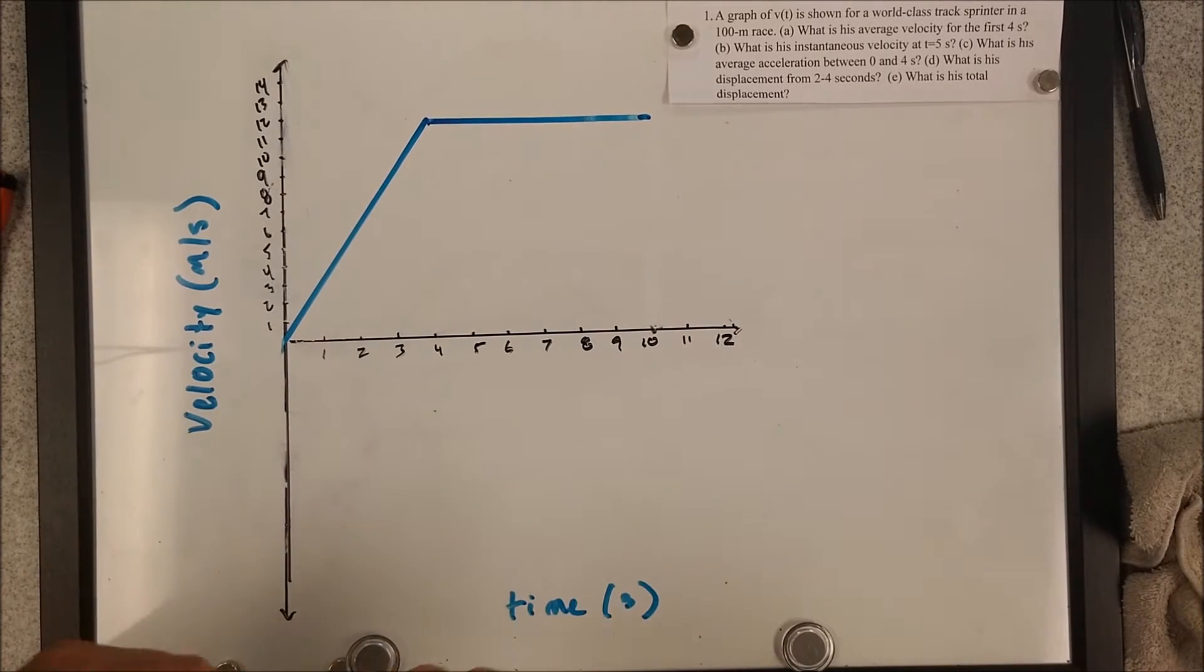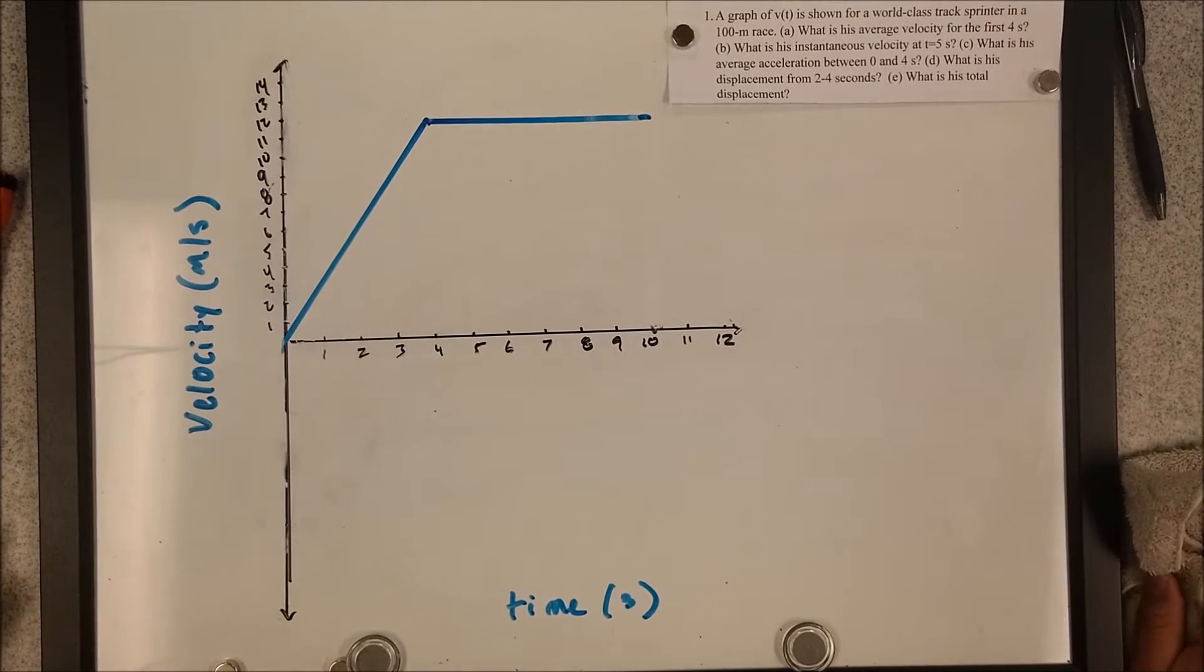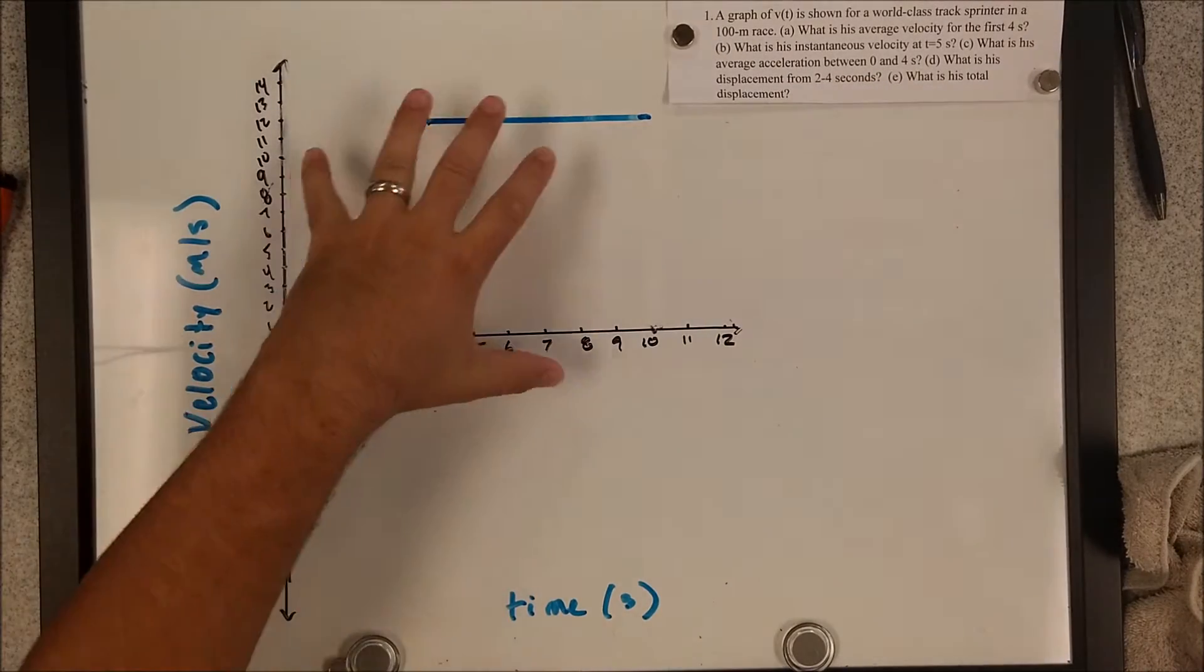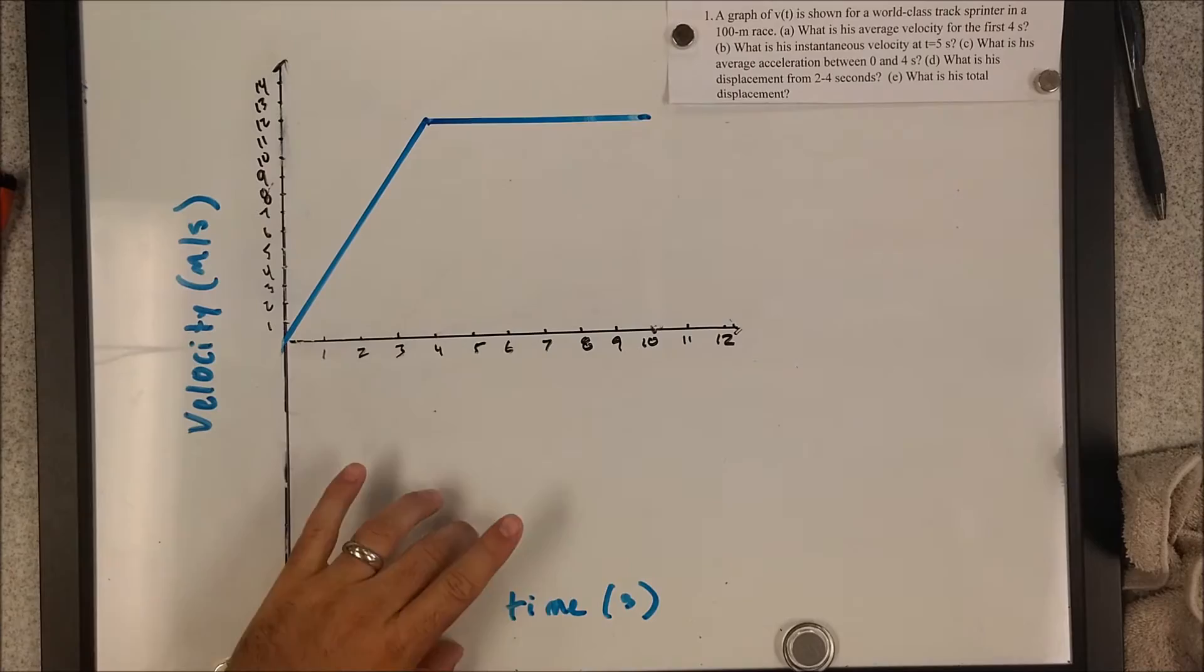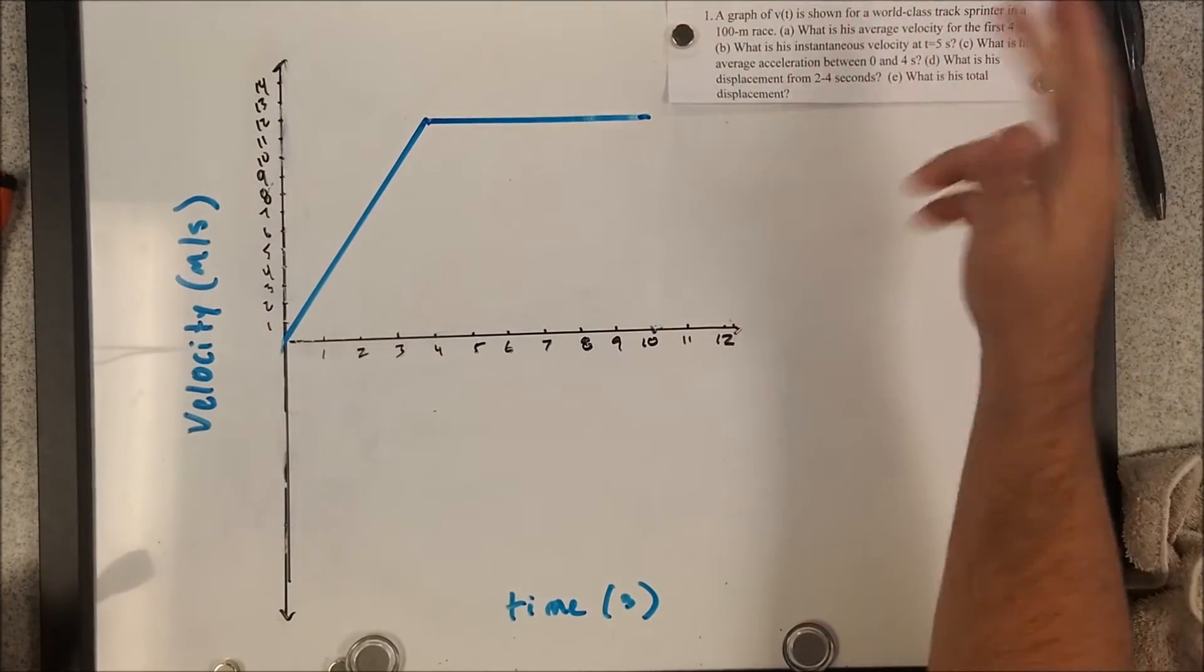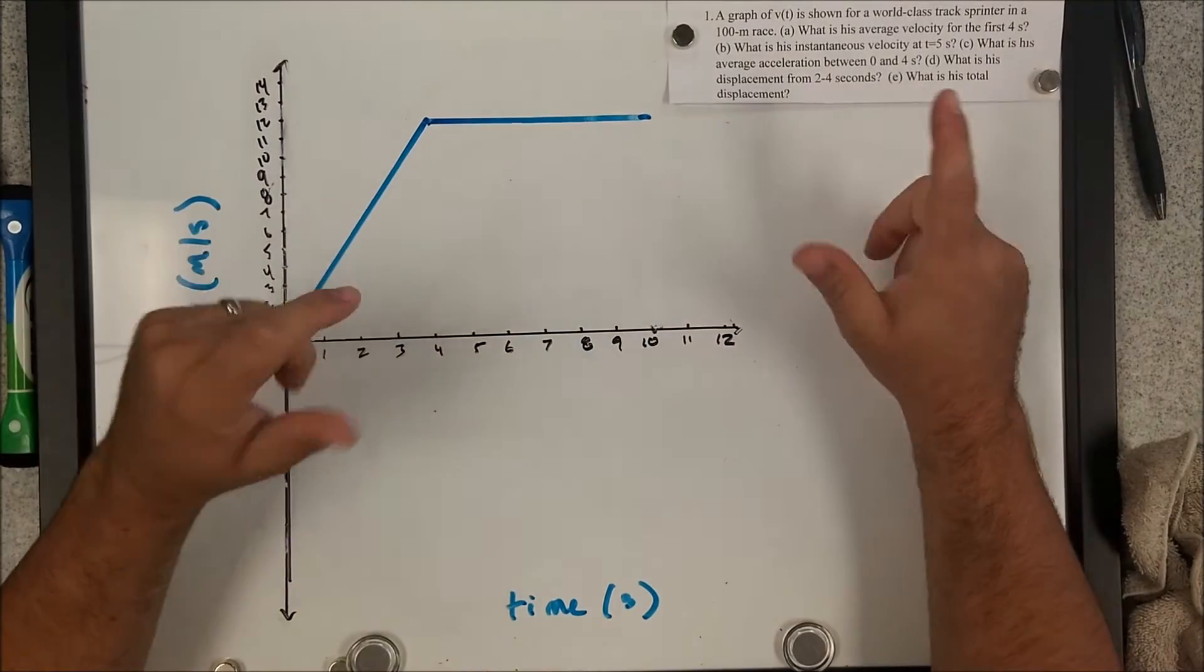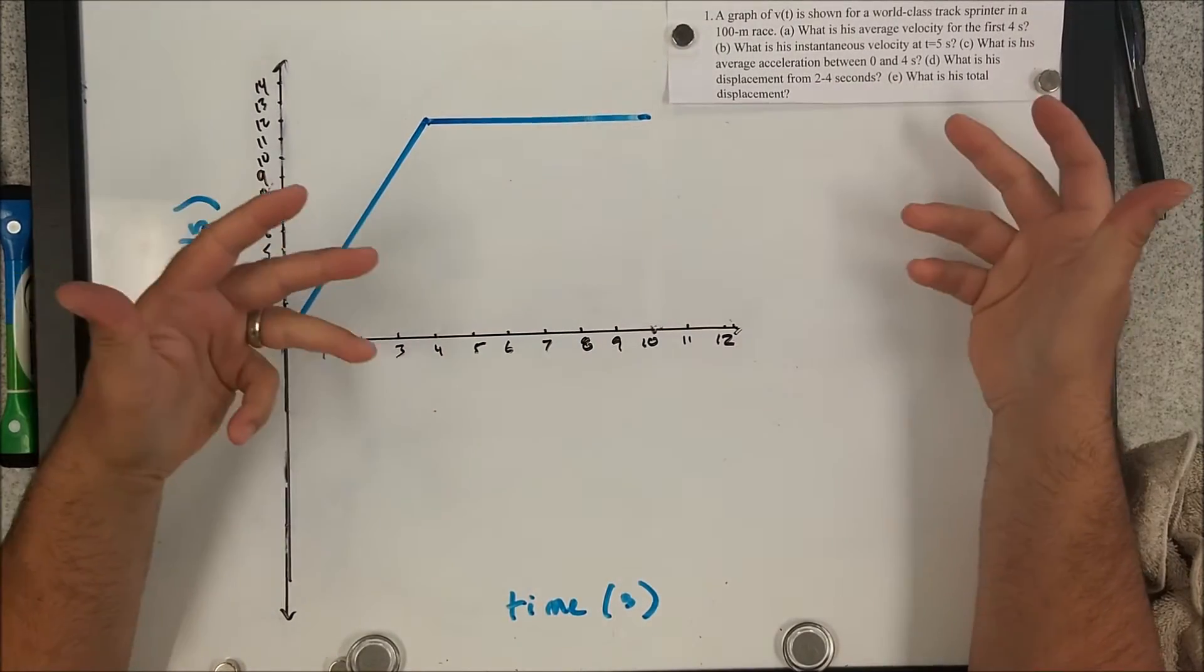Hey, Musso here. Let's do a motion graph example problem. You got the problem over here. If you can't see it very well, I'm gonna read it out loud anyhow. I've got the graph set up. It's a velocity time graph.